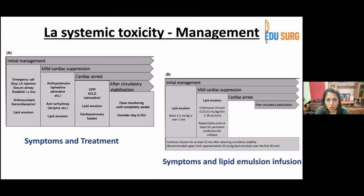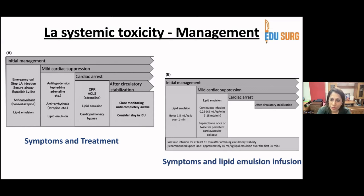The dose of lipid emulsion is 1.5 ml per kg IV over one minute. After the bolus, infuse at 0.25 to 0.5 ml per kg per minute. Repeat the bolus once or twice if there is persistent cardiovascular collapse. Continue infusion for at least 10 minutes or until circulatory stability is attained. The maximum is 10 ml per kg lipid emulsion over the first 30 minutes, with the rest of supportive management continuing as normal.